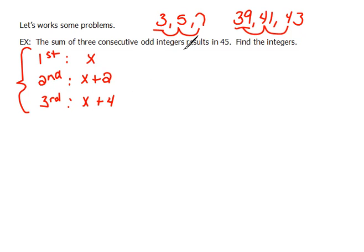And now we can do the translation. The sum of means add up the three consecutive odd integers, this one, this one, and this one. So we're adding our first to the second to the third, and that result should be 45. That's the direct translation.